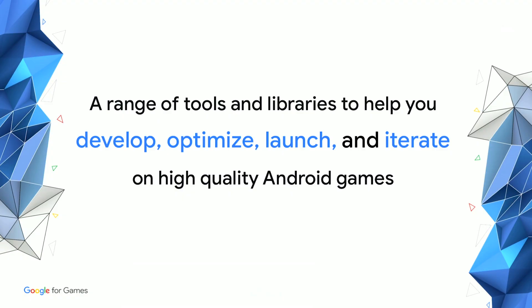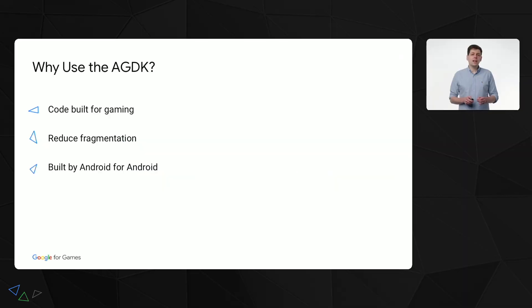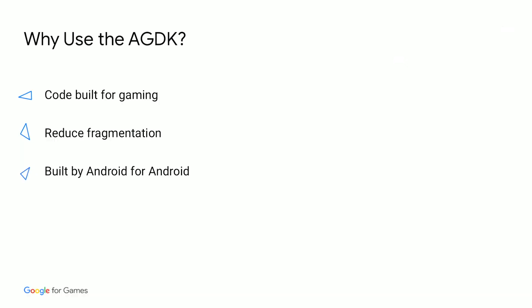Simply put, the AGDK is a range of tools and libraries to help you develop, optimize, launch, and iterate on high-quality Android games. Everything in the AGDK follows three key tenets. It's all code built for gaming — all of our libraries are intended to be used in C or C++ and have been built and tested with performance in mind. Secondly, we intend to reduce fragmentation; the tools and libraries work across many different Android SDK and NDK levels. And lastly, these tools were built for Android by Android — they'll be enhanced by future platform updates, updated before new Android versions land, and are backwards compatible, having undergone extensive testing.